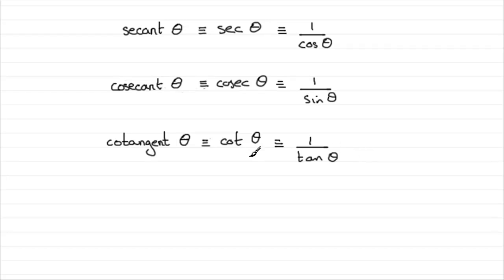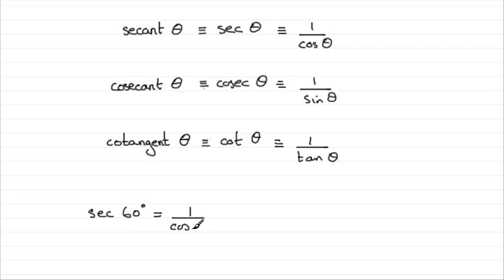Now, if you were to try and work out some of these functions for a particular angle — like, for instance, the sec of 60 degrees — well, you won't find the sec of 60 degrees on your calculator. You haven't got a button that has sec on it, just sine, cos, and tan. So obviously, what you're going to need to do is rewrite the sec function as one divided by cosine — in this case, one divided by the cosine of 60 degrees. We know that the cosine of 60 degrees is 0.5, or a half, and when you do one divided by a half, you get two. So you could easily use your calculator to work out sec, cosec, and cot of any angle.